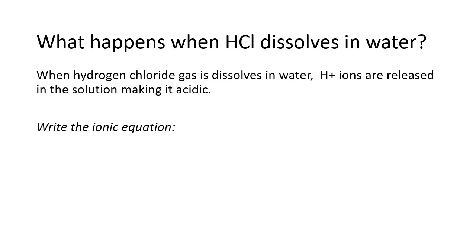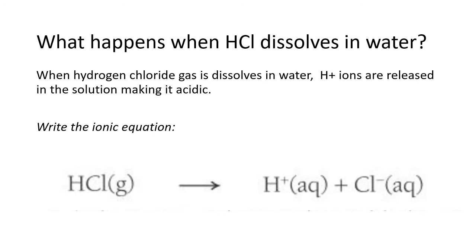What happens when hydrogen chloride gas is dissolved in water? We know that hydrogen ions are released in the solution, making it acidic. Pause the video and have a go at writing the ionic equation that shows specifically what happens to hydrogen chloride when dissolved in water, showing the ions that are formed. Hydrogen chloride is a gas before it's dissolved in water — check your state symbols — and it releases hydrogen ions and chloride ions into the solution.